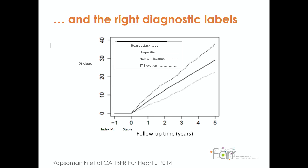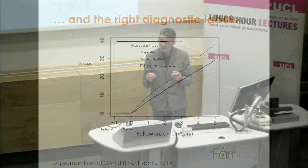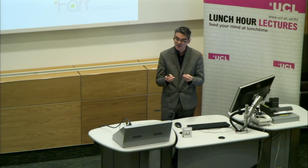Not only earlier diagnosis but the right diagnostic labels. The things we call diseases today will be called different things in five or ten years time. Here, time is on the bottom axis and percentage dead is on the vertical axis, showing different types of heart attack. You can see 'heart attack unspecified' in the middle, and the rather oddly named 'non-ST elevation heart attack' — whatever that entity truly is, it has very poor outcomes. The challenge is whether other information in the electronic health records could help us dissect and better define what that disease really is.